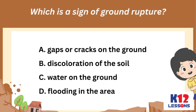Which is a sign of ground rupture? A. Gaps or cracks on the ground, B. Discoloration of the soil, C. Water on the ground, D. Flooding in the area.